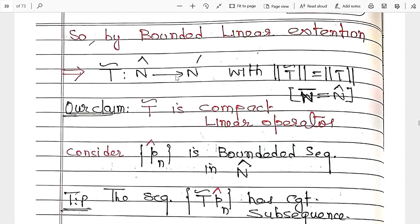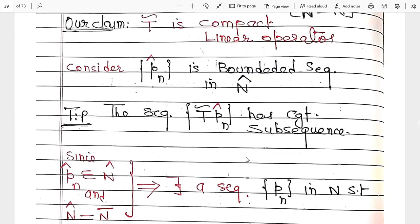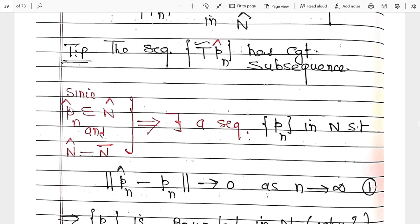Now T-bar(p_{n_k}^hat) and T(p_{n_k}) — here p_{n_k}^hat denotes the subsequence in N-cap, and p_{n_k} (simple) denotes the subsequence in N. So T-bar(p_{n_k}^hat) can be written as T(p_{n_k}). By using the bounded operator definition, the norm of T-bar(p_{n_k}^hat) minus T-bar(p_{n_k}) is less than or equal to the norm of T-bar times the norm of (p_{n_k}^hat - p_{n_k}).